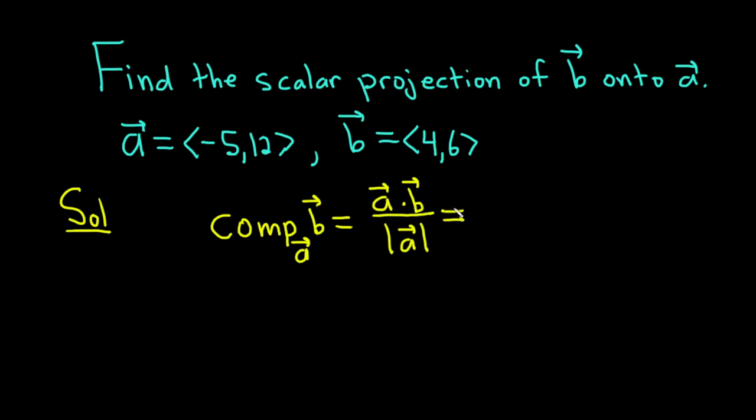So this equals, for A dot B, I'm going to replace A and B with the actual vectors. So it's negative 5 comma 12, dot 4 comma 6, over the magnitude of A, which is negative 5 comma 12.